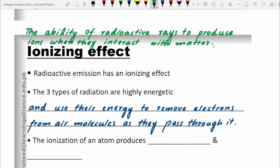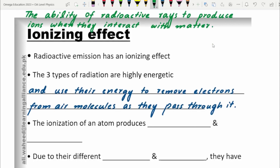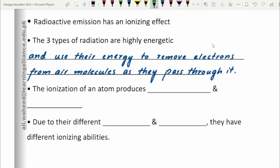Defining the ionizing effect precisely in the context of radioactive rays: it is the ability of those radioactive rays to produce ions when they interact with matter. Matter can be in any form — solid, liquid, or gas. That ability is called the ionizing effect, the process is called ionization, and ionization of atoms produces positive and negative ions.